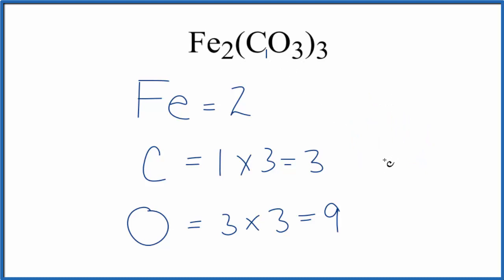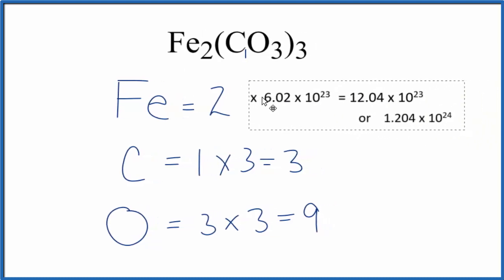Be asked to find the number of atoms in one mole of Fe2(CO3)3. In that case you take the number of each element, for instance we have two iron atoms, and we're going to multiply that by Avogadro's number.